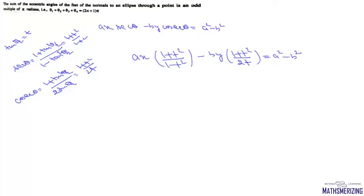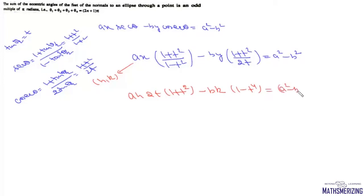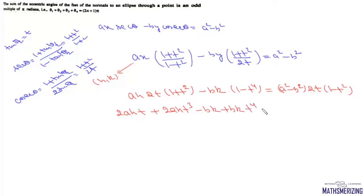Since the normal passes through point (h, k), we put x = h and y = k. This gives: ah·2t(1 + t²) minus bk(1 - t²)(1 + t²) = (a² - b²)·2t(1 - t²). Expanding, we get: 2aht + 2aht³ - bk + bkt⁴ = 2(a² - b²)t - 2(a² - b²)t³.